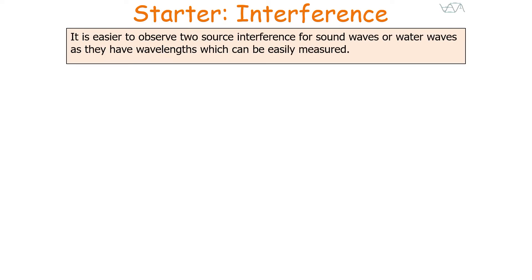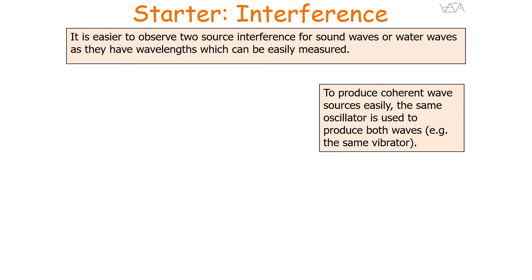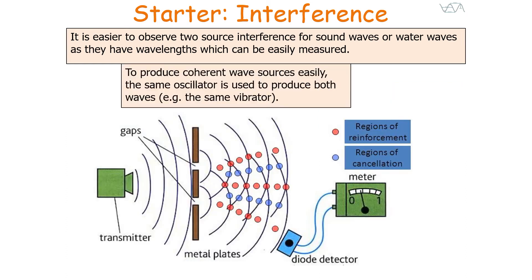It's easier to observe two-source interference for sound waves and water waves as they have wavelengths that can be easily measured, but you can also observe this with microwaves. To produce coherent wave sources, the same oscillator or generator is used to produce both waves. For water waves, you'd use the same vibrator to produce the two waves. As shown in this diagram, for microwaves, the same transmitter produces the wave, and two individual sources are created when it passes through two gaps.